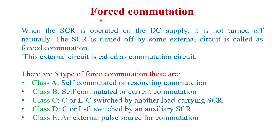Next is force commutation. As the name suggests, in force commutation we forcefully turn off a device with the help of external circuitry, which is called commutation circuitry. Force commutation is required when we give DC supply at the input side. Since DC supply is constant and does not change with respect to time, the device does not turn off naturally. So we require an external circuit to turn off the device — that process is called force commutation.